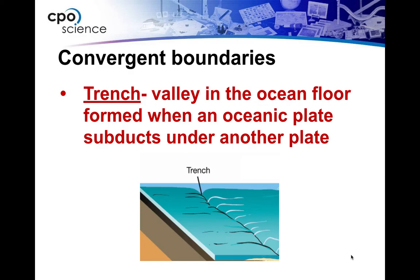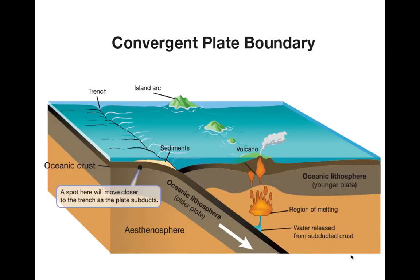At convergent plate boundaries where oceanic crust is involved, one scenario that can happen is a trench — a valley in the ocean floor formed when an oceanic plate subducts, meaning it goes down below underneath another plate. If you have two oceanic plates hitting each other, one gets pushed underneath and you get an area that can be really, really deep on the ocean floor. The oceanic lithosphere slides underneath the other oceanic plate, and as it goes down it gets hot, melts, and you can have a volcanic island chain form right above it.